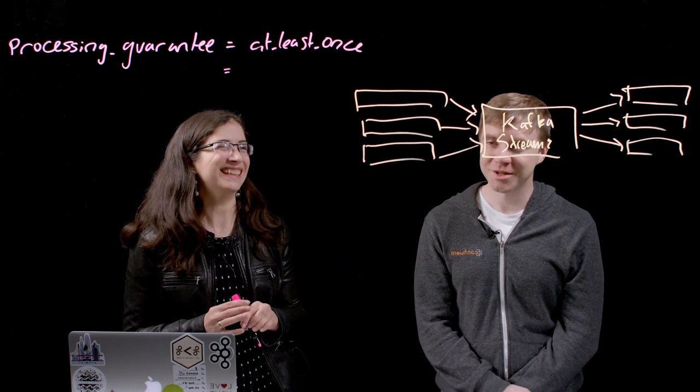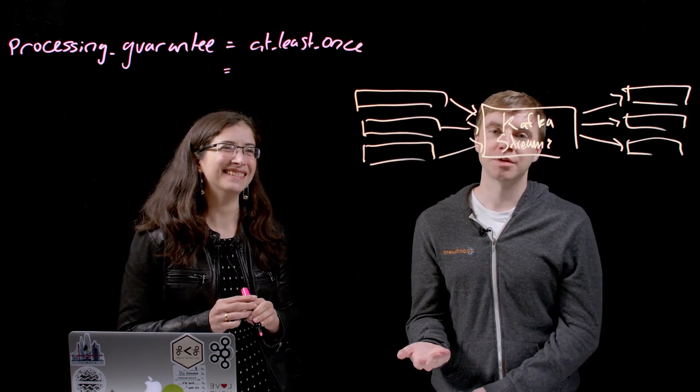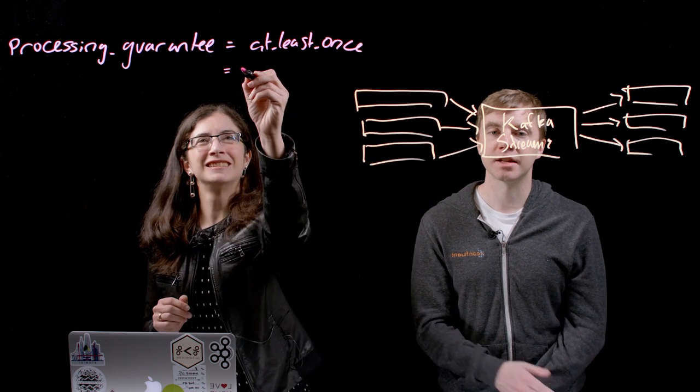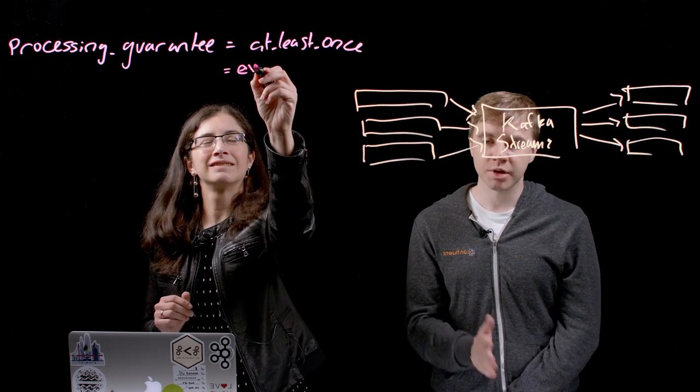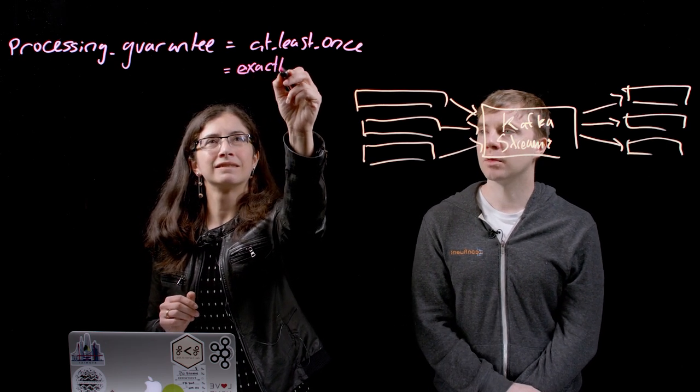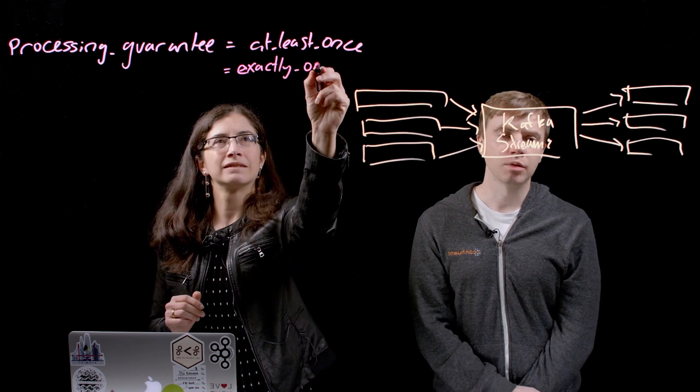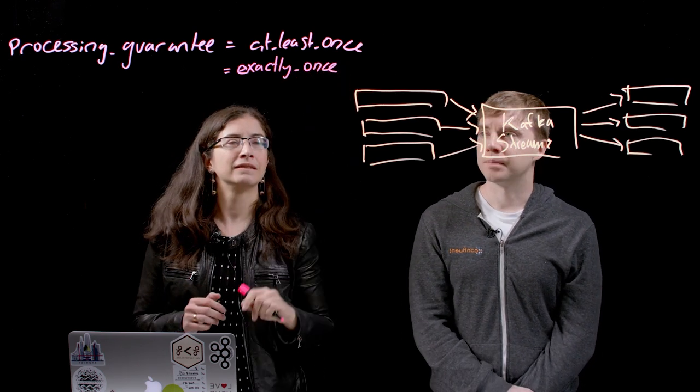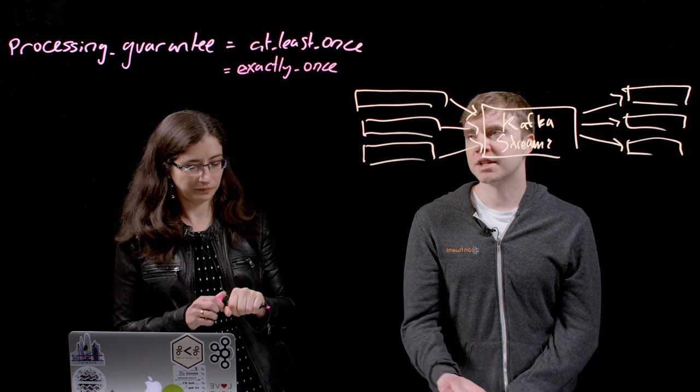So the problem with that is if you're doing any kind of aggregation or something, which depends on having any kind of correct result. You may be reporting that to the NASDAQ, who knows? So exactly-once is an improvement over this, where we're able to guarantee that for this processing from input to output, you only have the input reflected only once in the output.